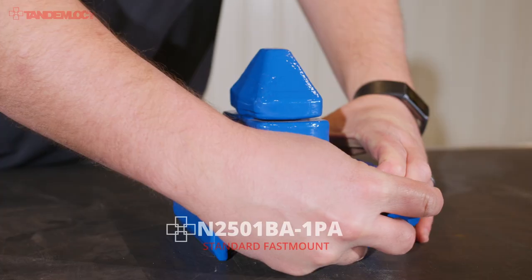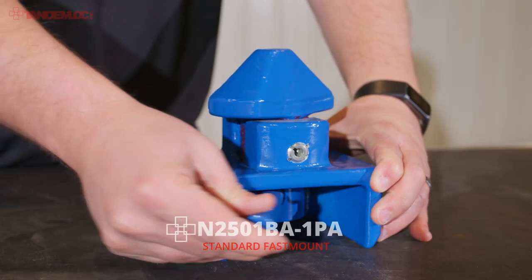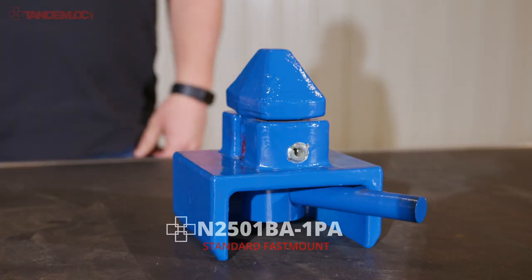This is our standard fast mount, the N2501 VA-1PA, and it allows customers to weld it to a surface or plate of their choice.